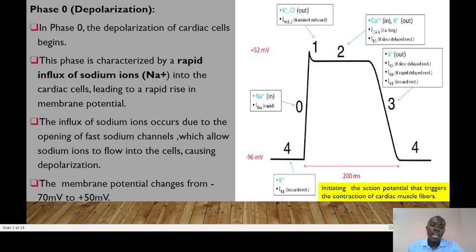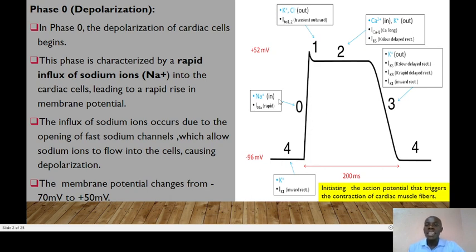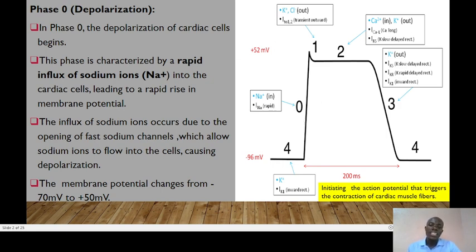The process of heart conduction is divided into five phases: phase 0, phase 1, phase 2, phase 3, and phase 4. Phase 0 is all about depolarization and contraction, where the cardiac cells normally start contracting. This phase is characterized by the rapid influx of sodium ions into the cardiac cells through the fast sodium channels, leading to a rise in membrane potential.